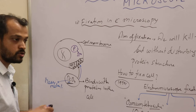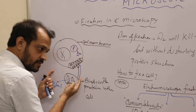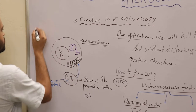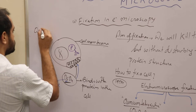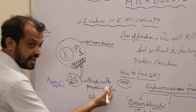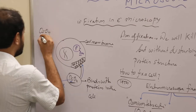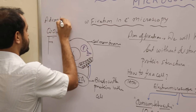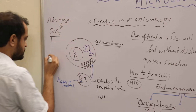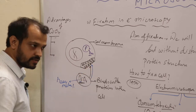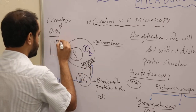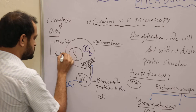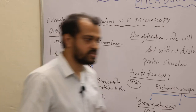So osmium tetroxide does two things: it binds with phospholipid, and it binds with proteins inside the cell. These are the two advantages when talking about osmium tetroxide — phospholipid binding and protein binding, and thus the tissue is fixed.